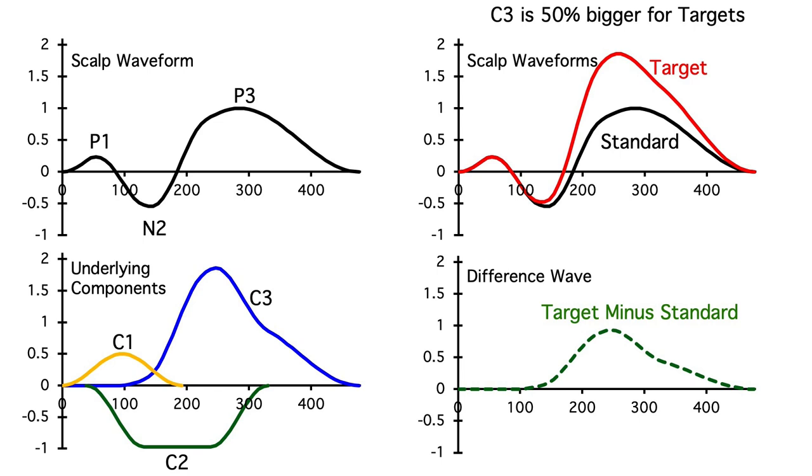By making a difference waveform, we can isolate the components that differ between the parent waveforms. And if we have a subtle experimental manipulation, there's a good chance that only one component will differ between the conditions.